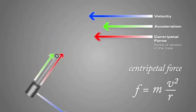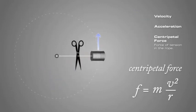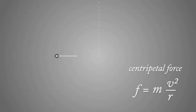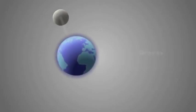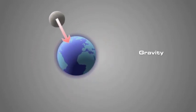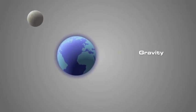A change in velocity results in the largest change in centripetal force. If the rope is cut, the can will no longer maintain a circular path and it will fly in a straight line tangent, due to Newton's first law of inertia. The force of gravity pulls the moon towards the center of the earth — this pull is the centripetal force keeping the moon in orbit. If earth's gravity ceased to exist, the moon would fly off into space in a straight line.